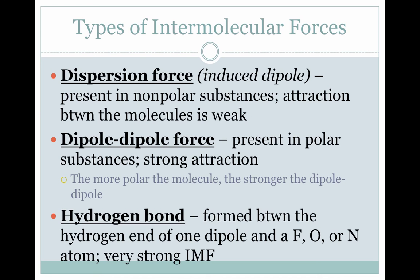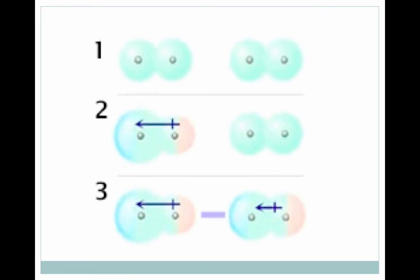A hydrogen bond occurs between hydrogen and — remember FON: fluorine, oxygen, or nitrogen. To look at the differences and similarities between these three: dispersion is the only one between nonpolar molecules; dipole-dipole and hydrogen bond are between polar molecules. The difference between a dipole-dipole and a hydrogen bond is that a hydrogen bond is just a very strong dipole-dipole.